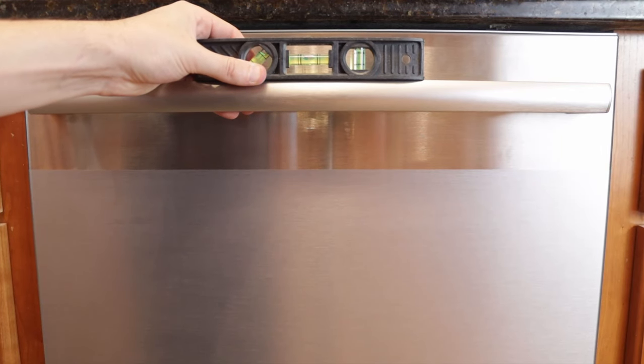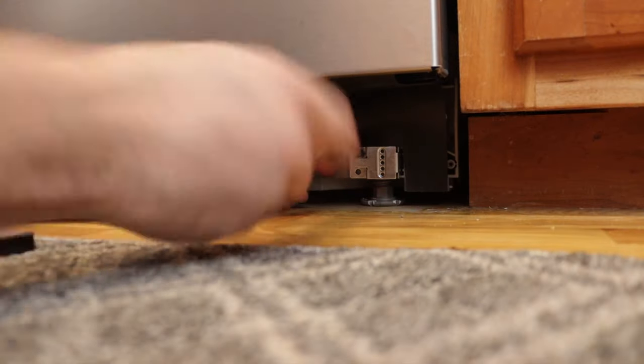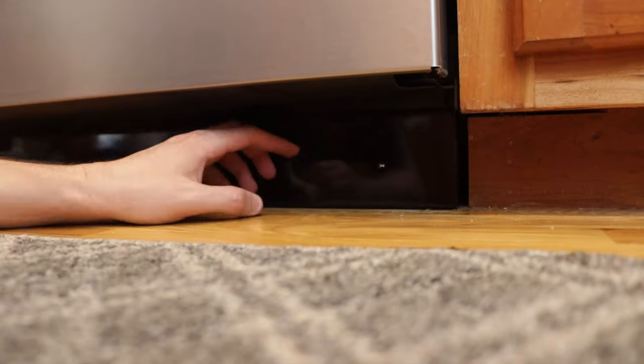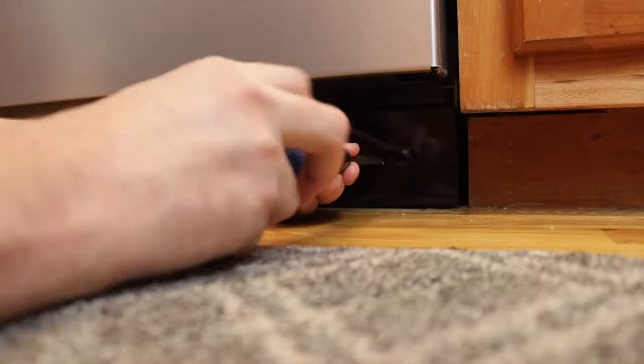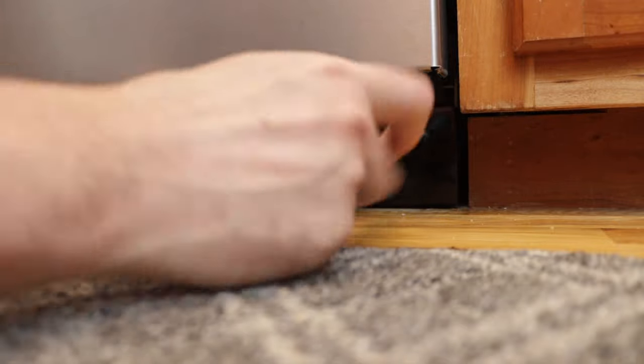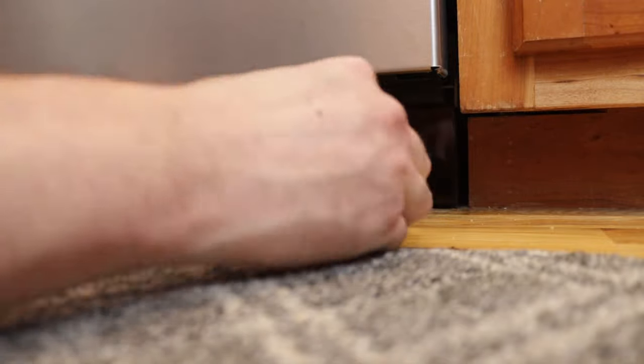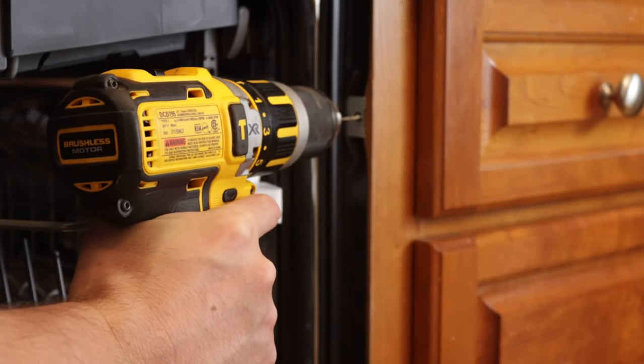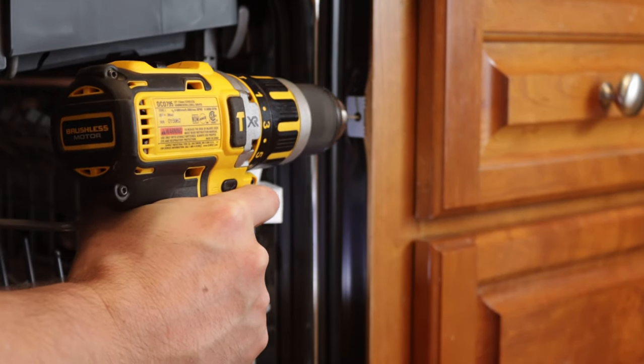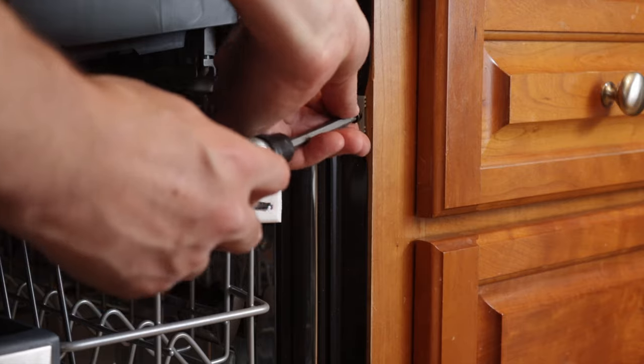And then we can go ahead and add the kick plates and screw it into the cabinet. Make sure to drill a pilot hole because most cabinets are made out of oak and oak is very dense, so it's hard to get the screw in otherwise.